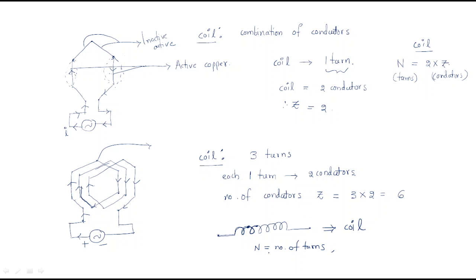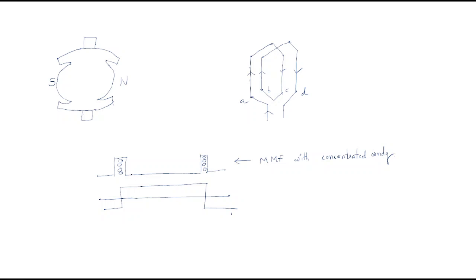Now, how do we make poles using coils? To produce a north and south pole, the north pole should eject flux from north to south. In order to form a north pole at one side and a south pole at the other, we need a cross symbol on one side and a dot on the other — meaning current direction must be arranged accordingly.